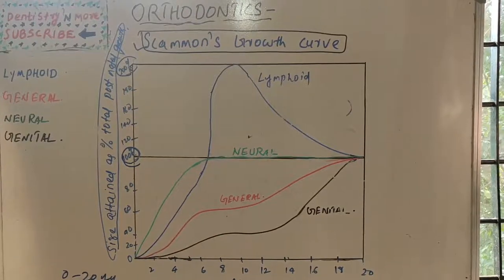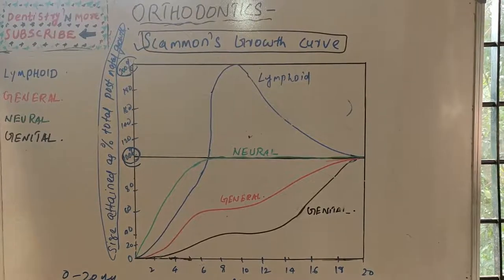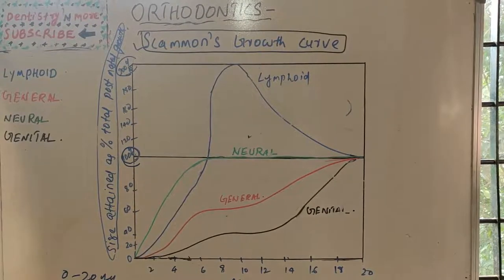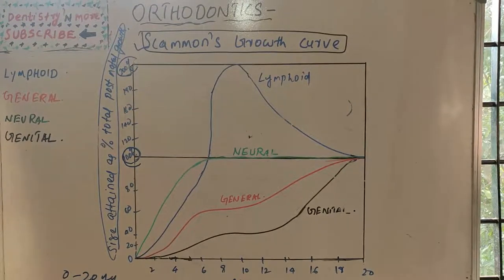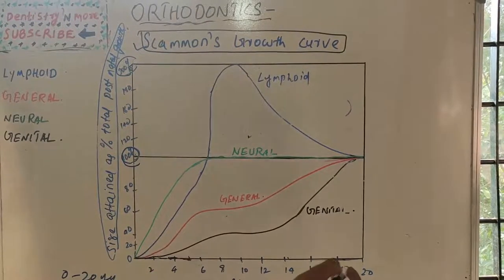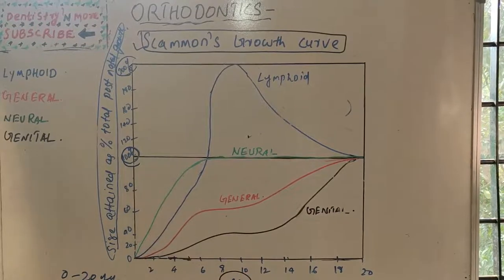Hello everyone, welcome back to another session in dentistry and more. Today we have Scammon's growth curve in orthodontics. This growth curve summarizes the postnatal growth of various body tissues: lymphoid, neural, general, and genital tissues. This curve summarizes the postnatal growth rate over the period of 20 years — by 20 years from birth, the growth of most body parts or tissues will be stopped.